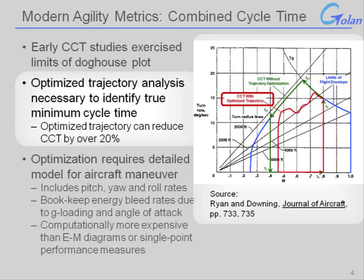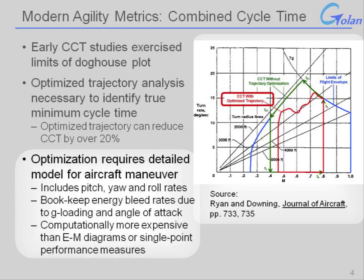When you perform an optimized trajectory analysis, you'll find that you can reduce the total combat cycle time by 20% or more. To do this, you need a detailed model of the aircraft performing the maneuver — including pitch, yaw, and roll rates — and you need to account for energy bleed rates due to both G-loading and angle of attack. It is a much more computationally intensive approach than something like an EM diagram or a single-point performance measure.